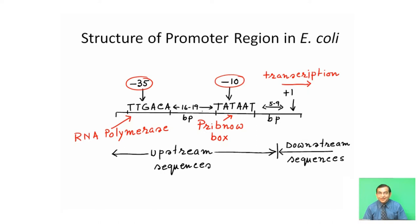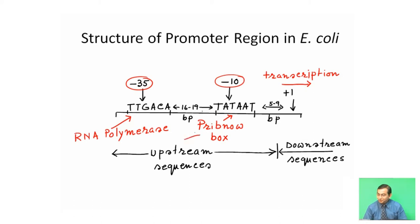On the other hand, the minus 10 sequence is AT-rich. It has a sequence T, A, T, A, A, T. It is also called the Pribnow box. RNA polymerase binds with the minus 35 sequence and initiates the transcription process.